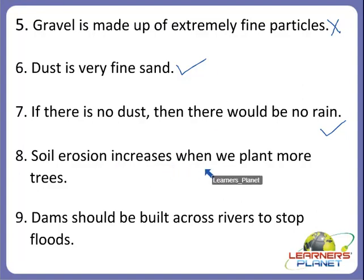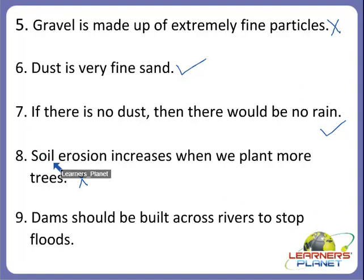Now the next one: soil erosion increases when we plant more trees. No — this is the wrong statement. Soil erosion decreases when we plant more trees. Planting more trees is very helpful, so we should plant more trees rather than cutting them, because cutting trees will increase soil erosion. And soil erosion is not good for growing crops.